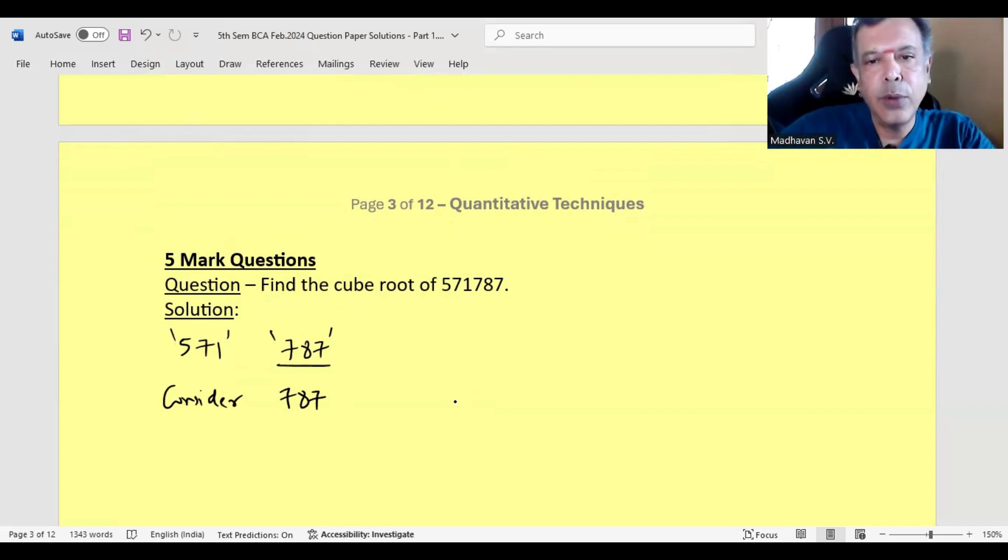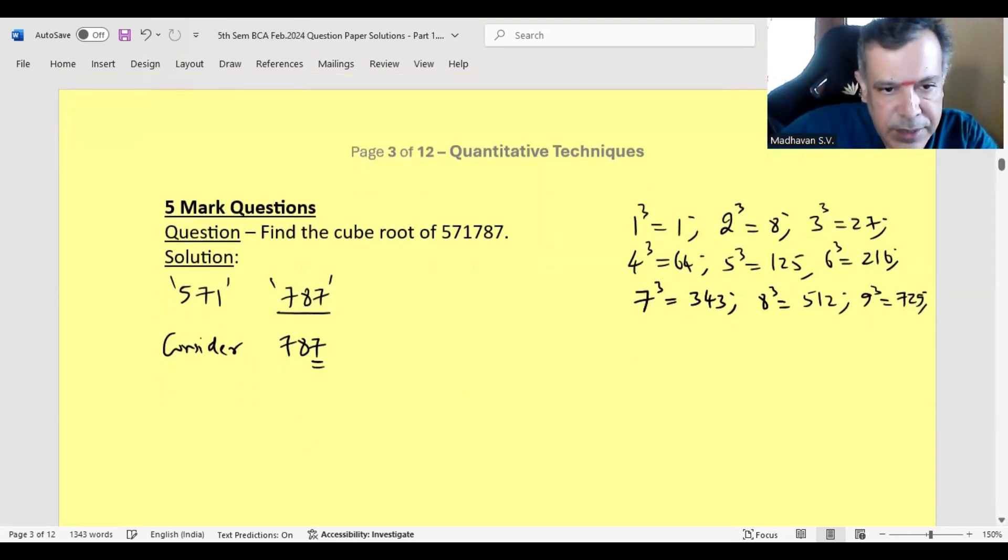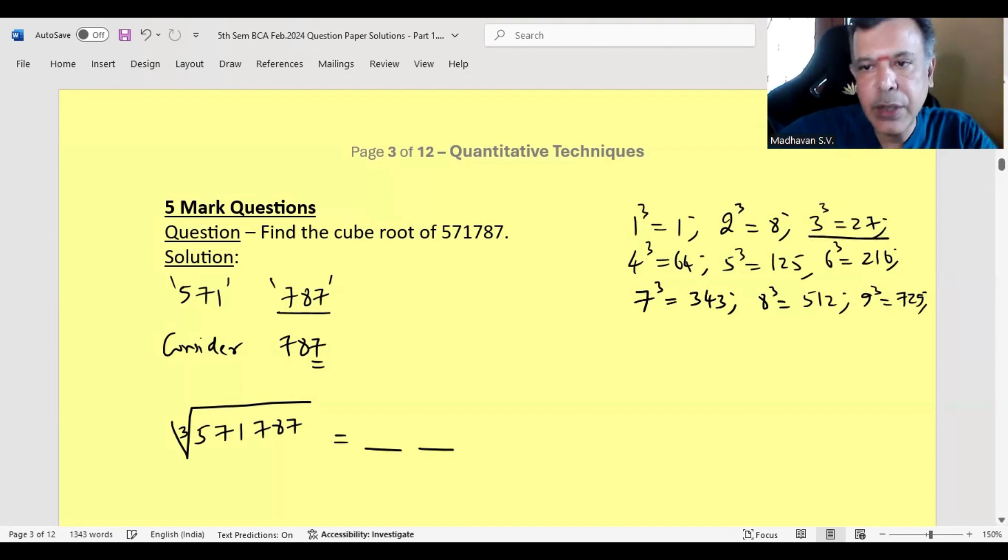Before we further proceed, we need to know the cube roots from 1 to 9. 1 cube is 1, 2 cube is 8, 3 cube is 27, 4 cube is 64, 5 cube is 125, 6 cube is 216, 7 cube is 343, 8 cube is 512, 9 cube is 729. Now, if we consider 787, the unit digit is 7. We notice 7 comes only when it is 3, meaning the cube root will have unit digit 3 because 3 cube is 27.